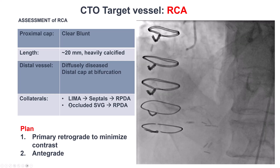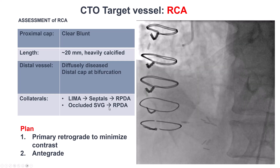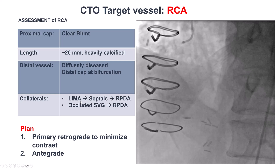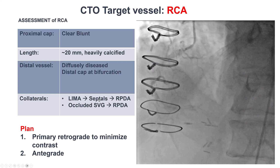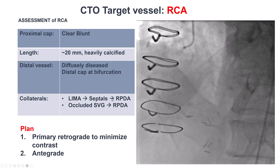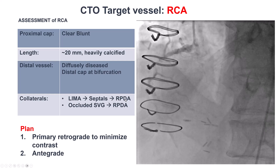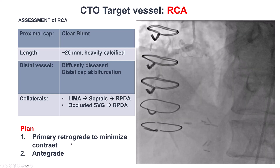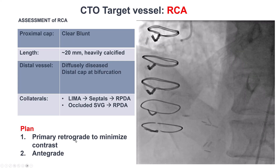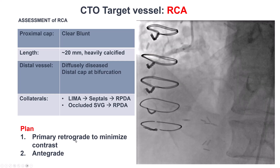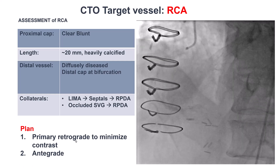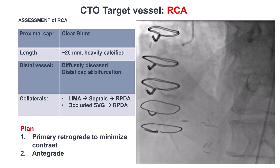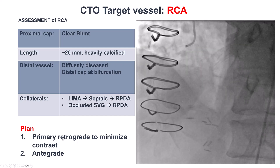As far as collaterals go, there was an occluded vein graft that was going to the PDA before, and currently it is the LIMA that is filling the LAD and then through septals filling the PDA. Our plan in this case was to use the occluded vein graft going retrograde, not only because it might be safer but also to minimize contrast use, and if that didn't work, to try antegrade crossing.